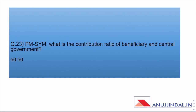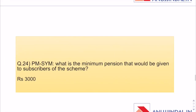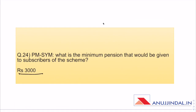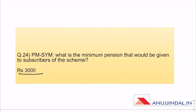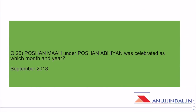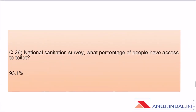TRIFED gives boost to local artisans and tribal people. PMSYM contribution ratio of beneficiary to central government is 50-50, and the minimum pension given to subscribers is Rs. 3,000. The entire list of monthly contributions based on age of entry and corresponding pension after age 60 had been provided — some students said it was too much, but questions came directly from those areas.